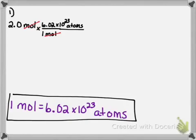And to get our final answer, all we have to do is multiply 2 times 6.02 times 10 to the 23rd on our calculator. Doing that and rounding to the hundredths place, we get 1.20 times 10 to the 24th.